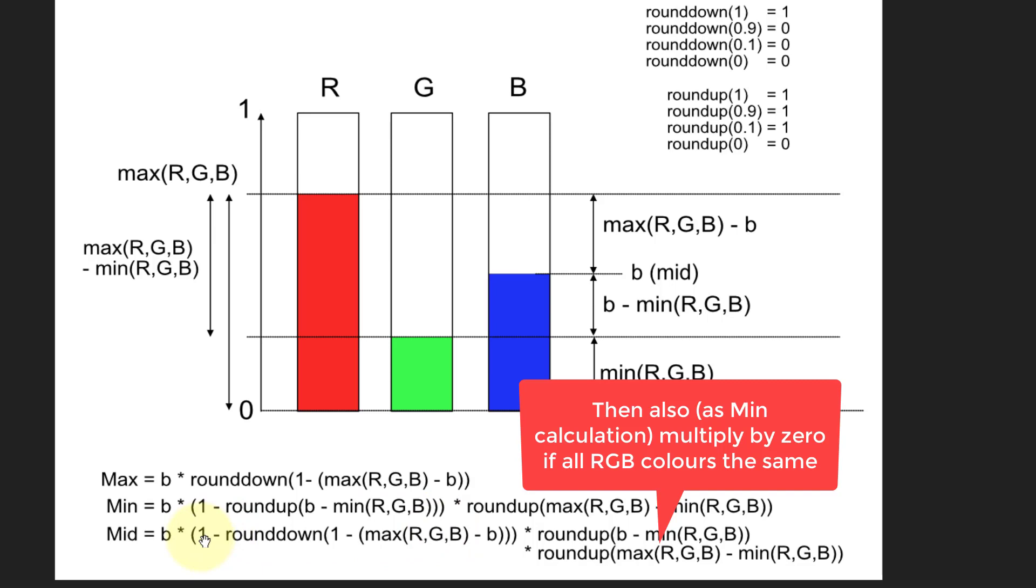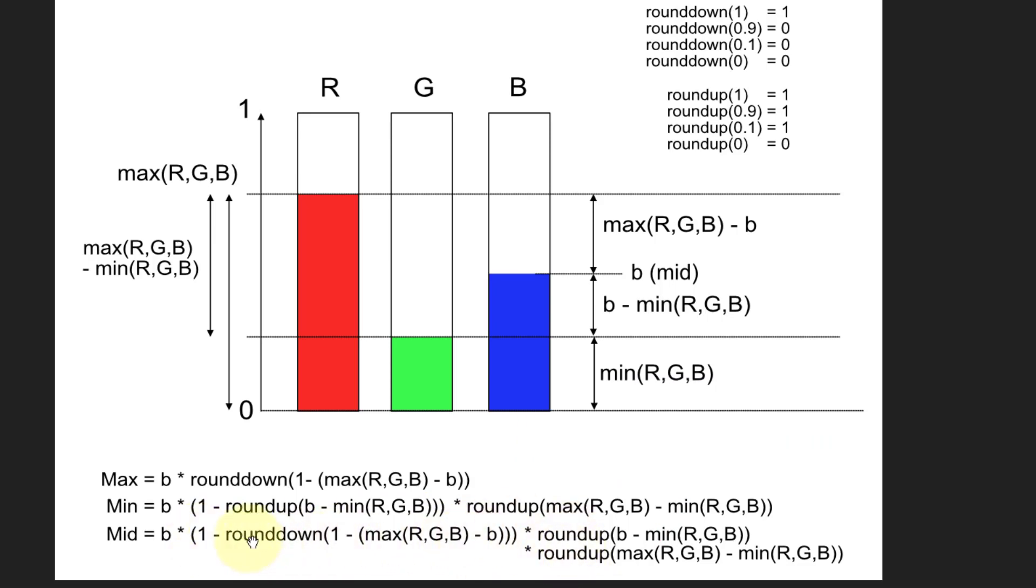So it gets rid of that as well. So there's a, each of these multiply here is going, I want a one for this, but not if it's this and not if it's this. And that gives us the way of doing the 3M model.